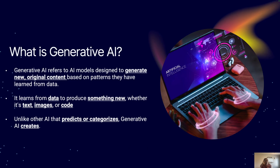So the first thing we need to touch on is: what is generative AI? Generative AI refers to AI models — there are many AI models like deep neural networks, ANNs, even linear regression — but generative AI is specifically designed to generate new and original content. Traditional AI models make predictions from the data you give them, but generative AI, as the name suggests, generates new content — new images that never existed before.